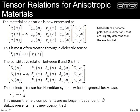We cannot arbitrarily choose all nine elements of the tensor. One restriction is Hermitian symmetry: elements on either side of the diagonal must be complex conjugates of each other (or equal, if there is no loss). Another restriction is that we live in a three-dimensional world, so there are really only three degrees of freedom. We can only pick three numbers; the off-diagonal elements arise when we rotate the coordinate system.